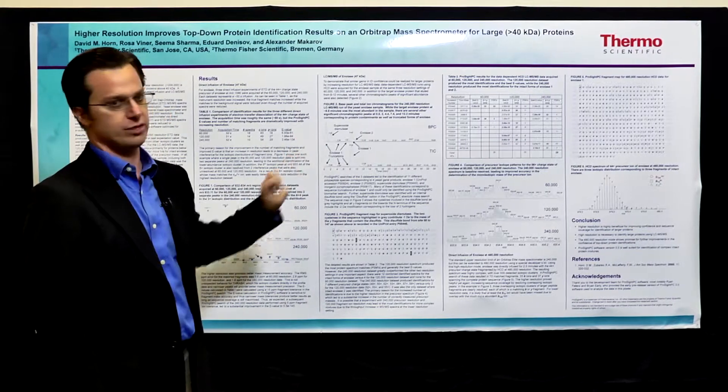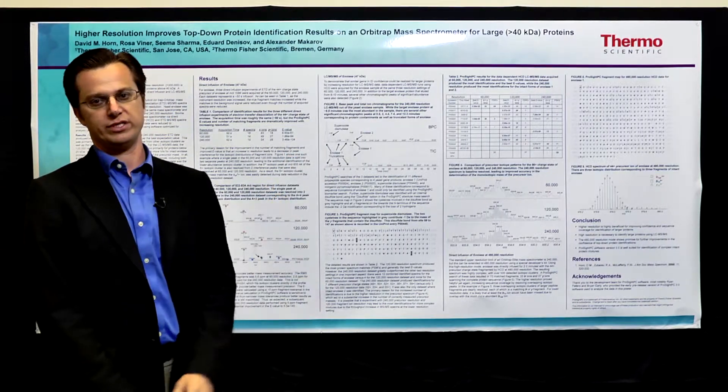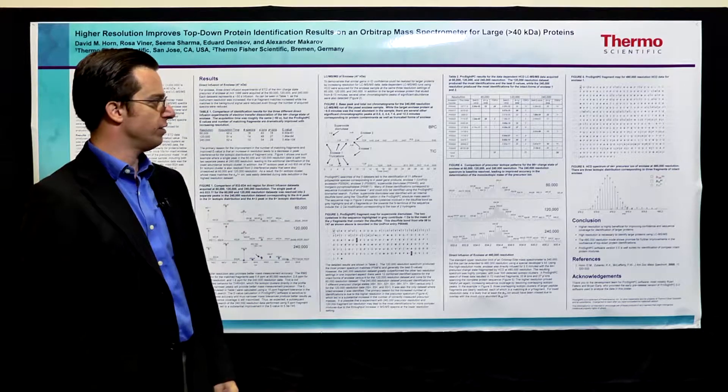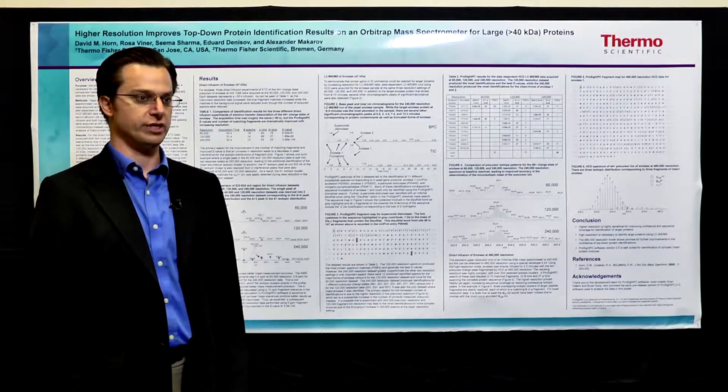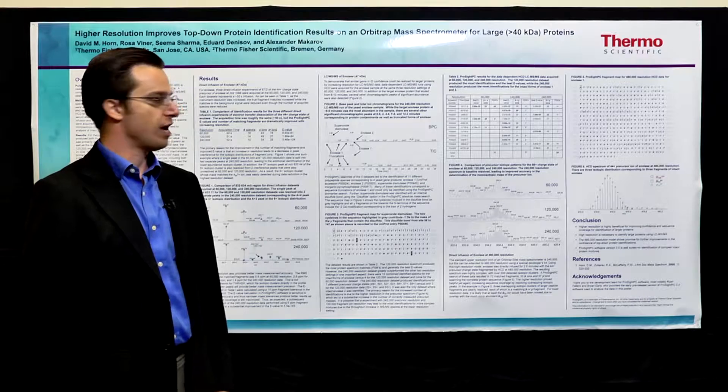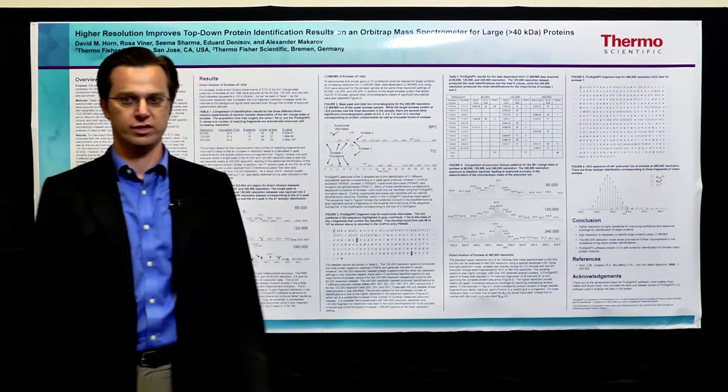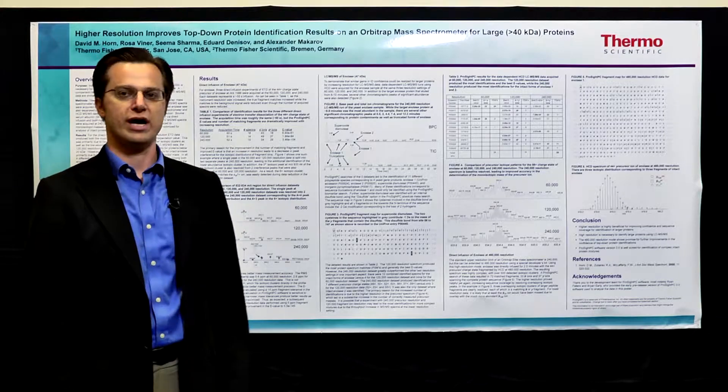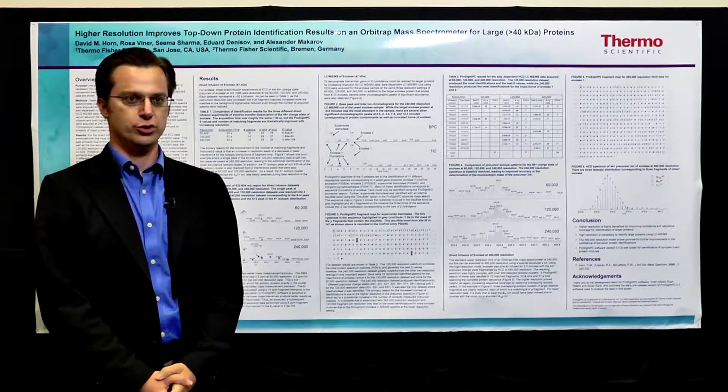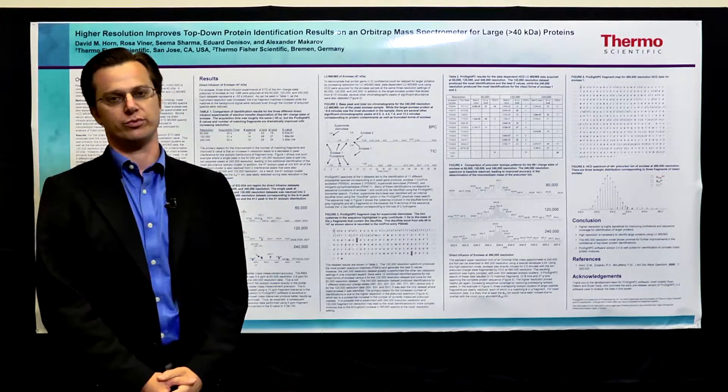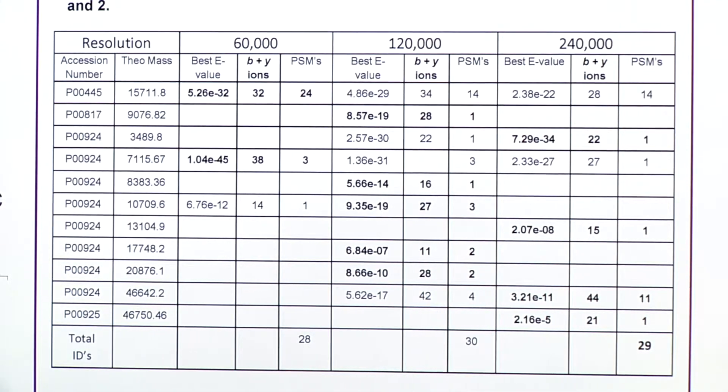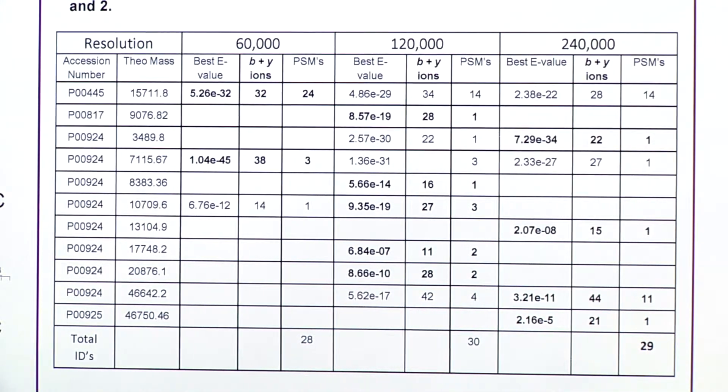So we took that data set, ran it through the ProSite PC software, and we identified four different proteins with their accession numbers, and the target protein enolase was actually identified in nine different forms. So this is actually not that surprising for intact protein samples. Usually these proteins do exist in multiple forms, and if you don't do a top-down type of experiment, you won't actually even know that.